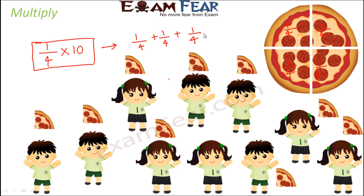When we multiply 1/4 by 10, we are basically trying to add 1/4 ten times because there are 10 kids. So this is 1/4 + 1/4 + 1/4... repeated 10 times. Adding 1/4 ten times is a tedious job, so instead of adding the same number multiple times, we multiply it. Since we want to add it 10 times, we say 1/4 multiplied by 10, and that tells us how many pizzas we need.